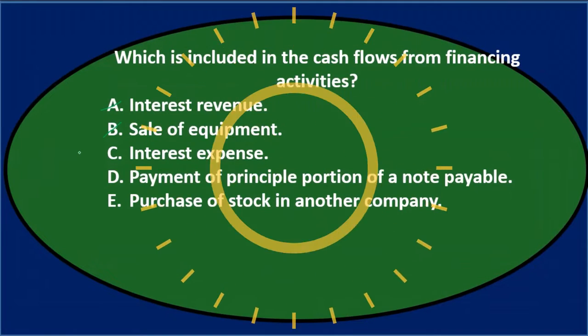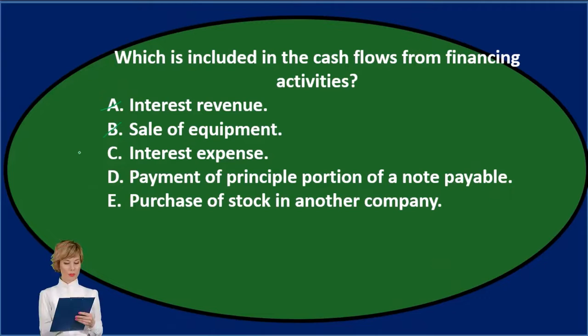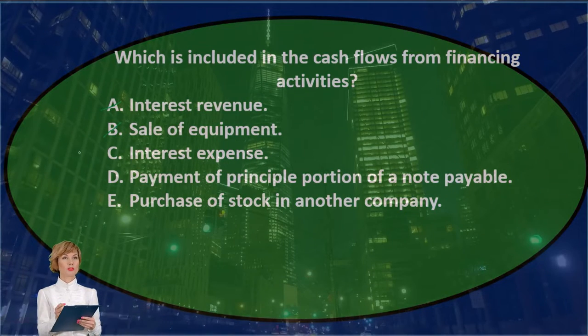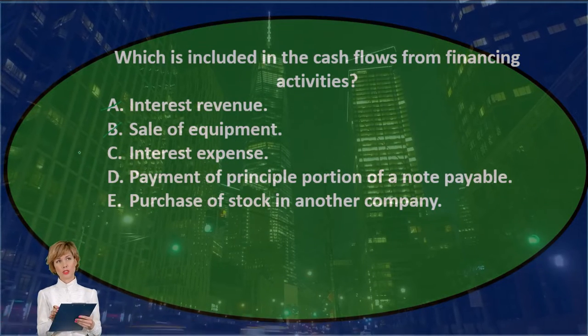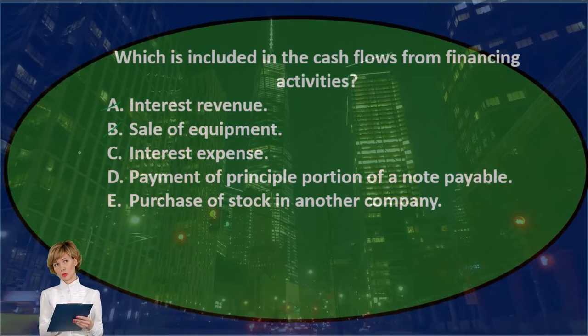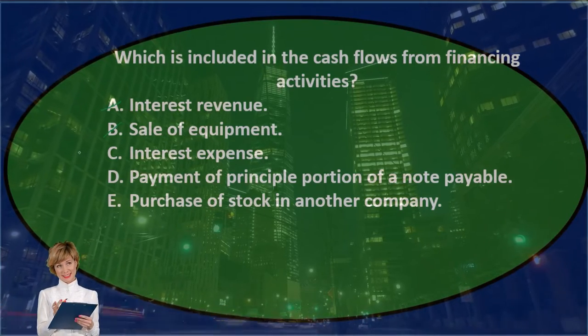C) interest expense — the journal entry would be credit cash and debit interest expense. Interest expense is an income statement account, and therefore it's probably part of operating activities, not financing.